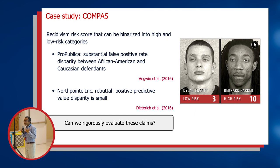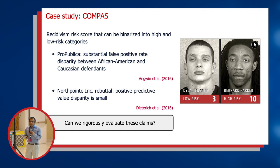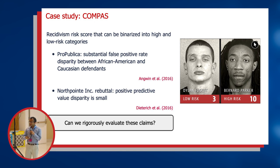COMPAS is an algorithm used by the courts in Florida to assign a recidivism prediction score — a likelihood of reoffending when someone is up for parole. A high score indicates a higher likelihood of reoffending. In 2016, ProPublica launched an investigation of the COMPAS algorithm and found that the false positive rate for Black defendants was much higher than for white defendants, meaning that among defendants who did not ultimately recidivate, they were much more likely to be inaccurately predicted as high risk.